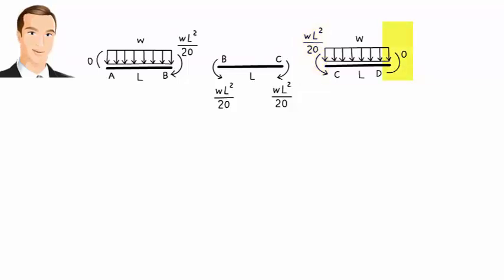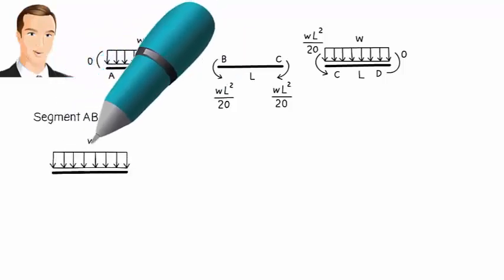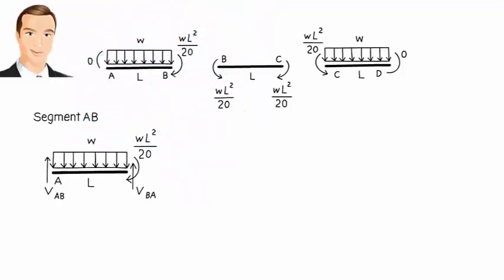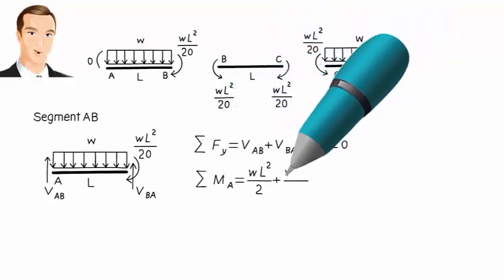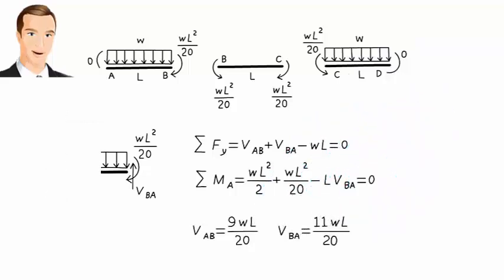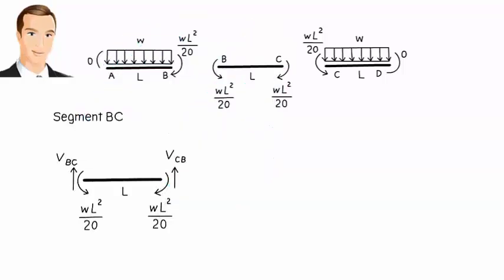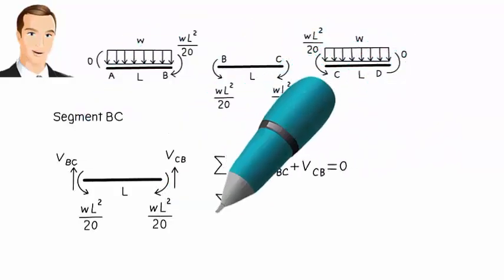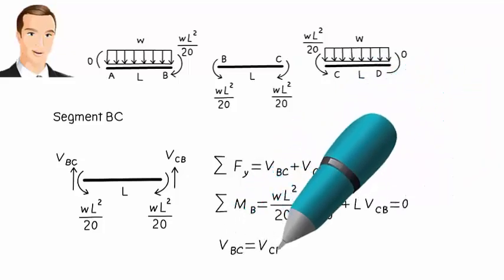We can now calculate member end shear forces in each segment. Here is the complete free body diagram for segment AB. Using equilibrium equations, we calculate the left end and right end shear forces. We repeat this for segment BC. Here is the segment's free body diagram. Here are the equilibrium equations and member end shear forces. Both are zero.